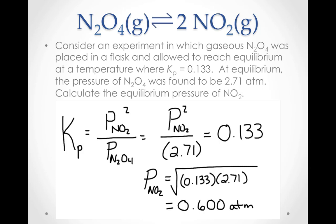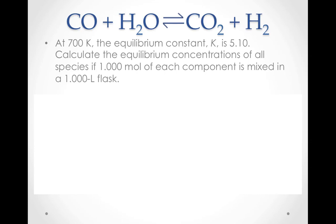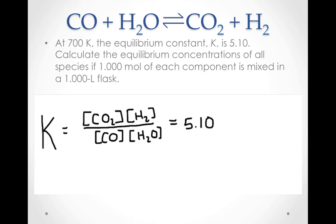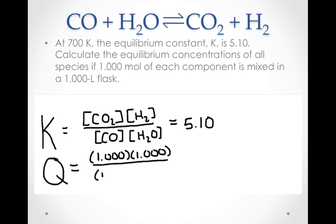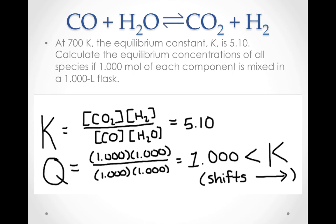Most equilibrium problems do not include information about the system at equilibrium, however. For example, what is the equilibrium position for this equilibrium between carbon monoxide and water, which react to form carbon dioxide and hydrogen? At 700 Kelvin, the equilibrium constant is 5.10, and 1.000 mole of each species is initially mixed together in a 1.000 liter flask. We'll start by considering whether the reaction is already at equilibrium by calculating the reaction quotient. Since Q for this reaction under these conditions is 1, and that is less than K, the reaction must proceed to the right, forming more products before it reaches equilibrium.